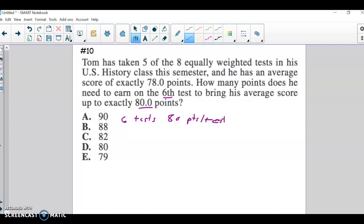So if you just multiply those two together, 6 tests at 80 points a test, that gets you 480 total points is what he's going to need, right, which makes sense. So at the end, if you have 480 total points, divide that by 6, that'll get you the average you want of 80. So we're kind of reversing that by doing 6 times 80.